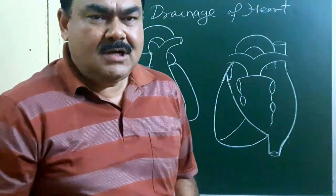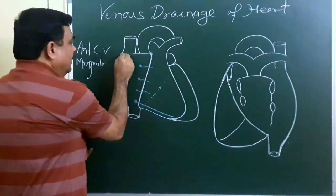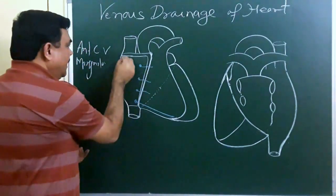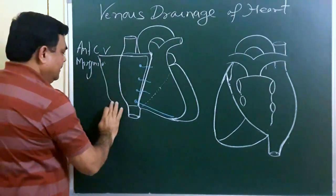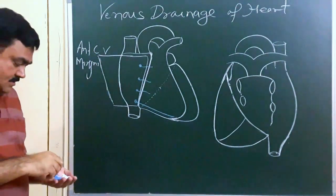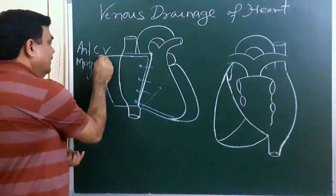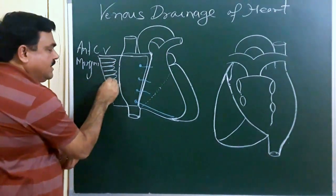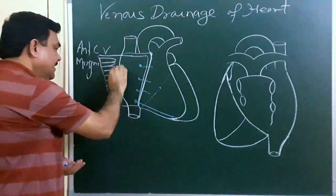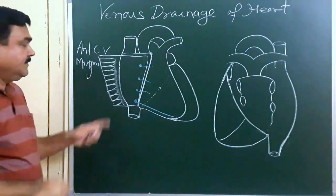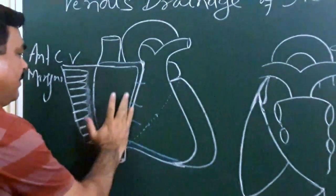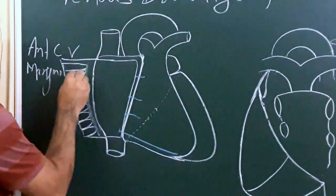If you cut the right atrioventricular groove and reflect it, here you can see numerous musculi pectinati. These are numerous musculi pectinati. Here you can see the crista terminalis. The crista terminalis runs between the musculi pectinati.